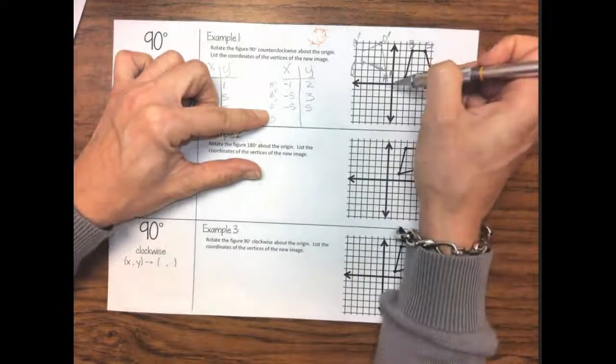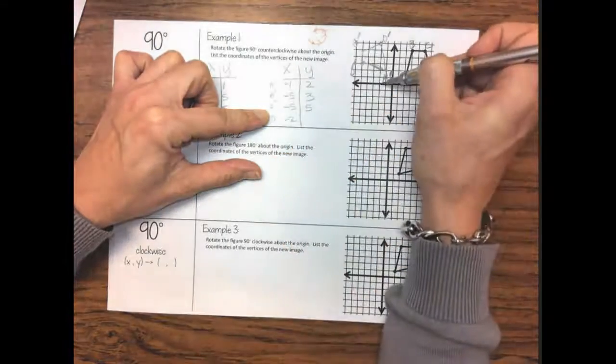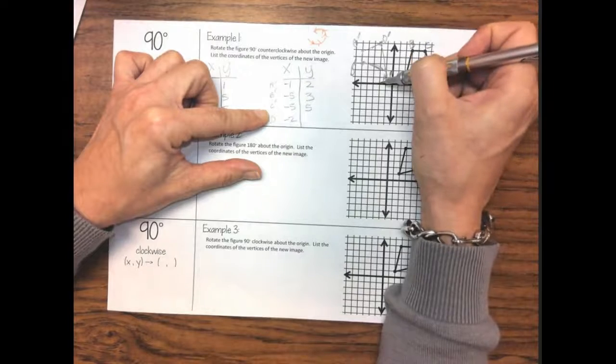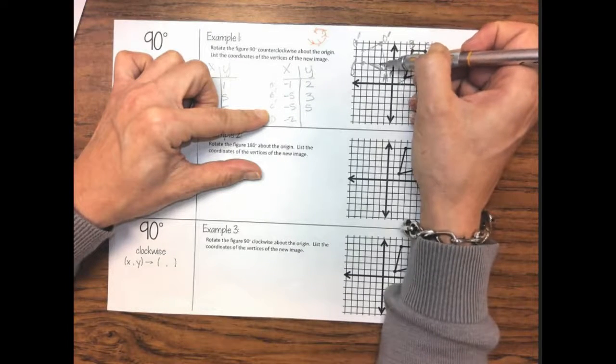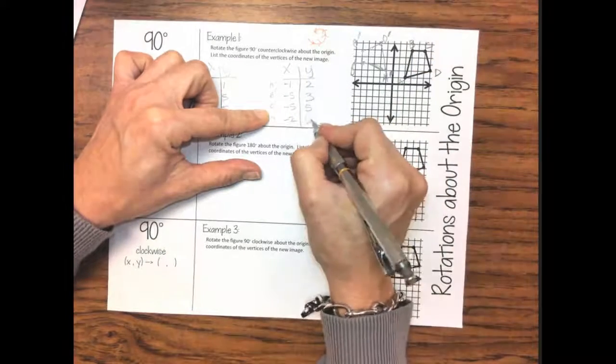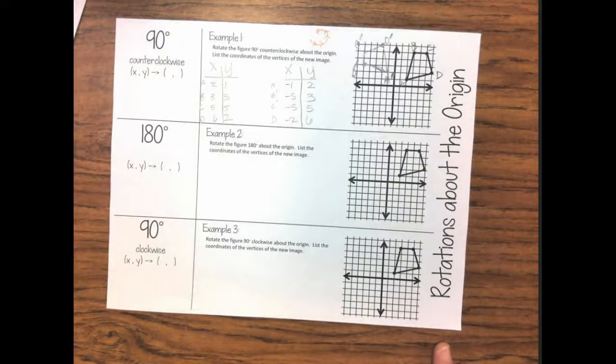And d is negative 2 and 6 units all the way up. So if you take a look at this I notice a pattern and I hope you notice that too.